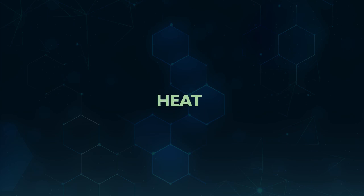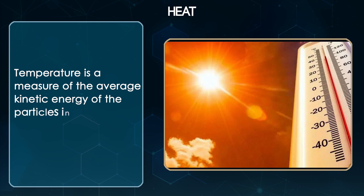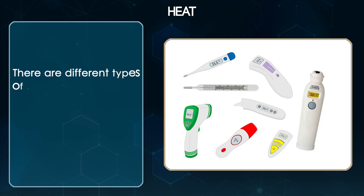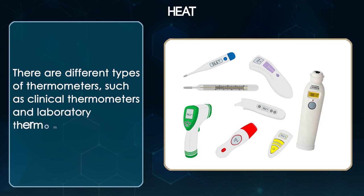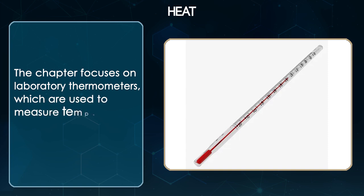Heat. Temperature is a measure of the average kinetic energy of the particles in an object and it can be measured using a thermometer. There are different types of thermometers such as clinical thermometers and laboratory thermometers. The chapter focuses on laboratory thermometers which are used to measure temperature in scientific experiments.